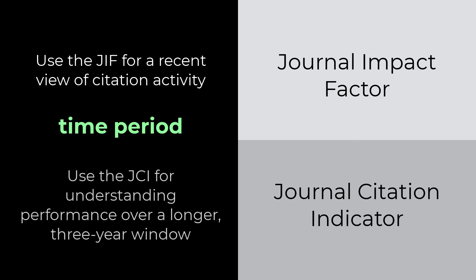Use the JCI for understanding a journal's citation performance against its peers over a longer, three-year window. Because it's a normalized metric, you can also use this for comparisons outside of the immediate subject category.